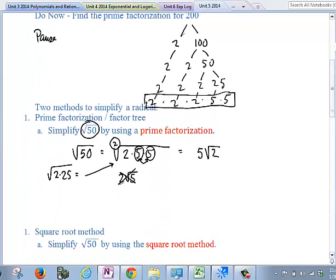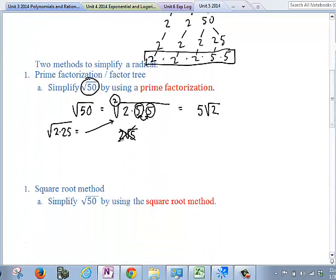The next way we can simplify a radical is called the square root method. So when we do the square root method, what you have to do is you're trying to identify which perfect squares can be factored out of the number under the radical. For example, I'll write down some perfect squares. So the perfect squares, starting from 1, moving upward, is 1,